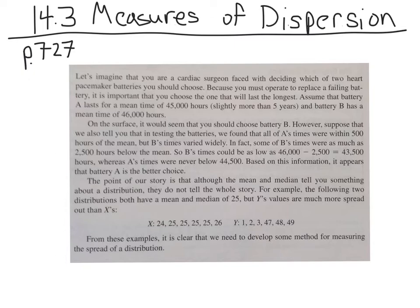To hammer this home, look at these two data sets at the bottom. X and Y. These both have a mean of 25, mean and median of 25. This one makes sense, because all the values are very close to 25. This one, it's hard to see, but if you actually add them up and average these two, you will get 25. But 25 doesn't have much to do with this data. So this data has a very low variation, a very low spread. This data has a very high spread.